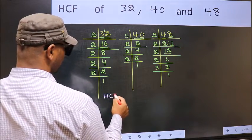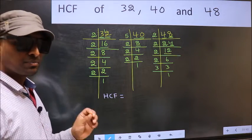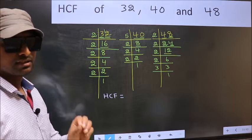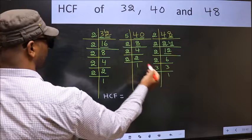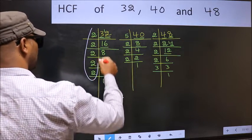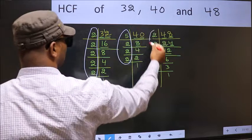Therefore, HCF is the product of numbers which should be present in these 3 places, that is here, and here, and also here.